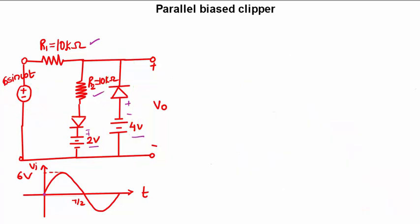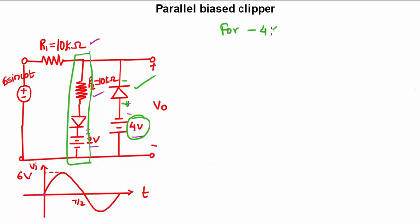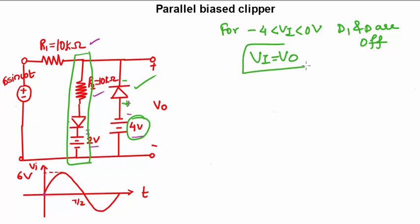In the negative half cycle, D1 will be reverse biased, so we need not consider it. We consider D2 in the negative half cycle, trying to forward bias it when overcoming 4 volts. Since there is no resistance in series with D2, for input voltage Vi between 0 and −4 volts, both D1 and D2 are off — both are reverse biased — so Vi equals Vo.